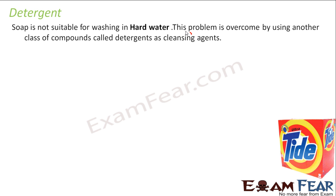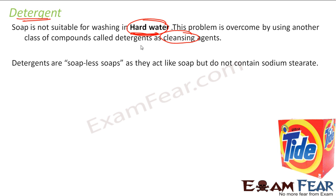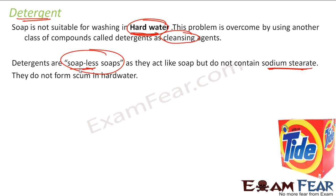Both soap and detergent are cleansing agents — they are made for cleaning. But detergent also works with hard water. They are called soapless soap. They act like soap but they don't contain sodium stearate. They don't have the long chain of carbon carboxylic acid or sodium or potassium salts. They don't form scum in hard water and work perfectly fine in hard water.